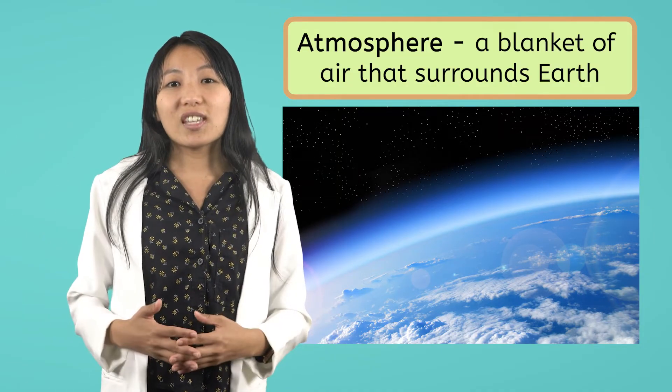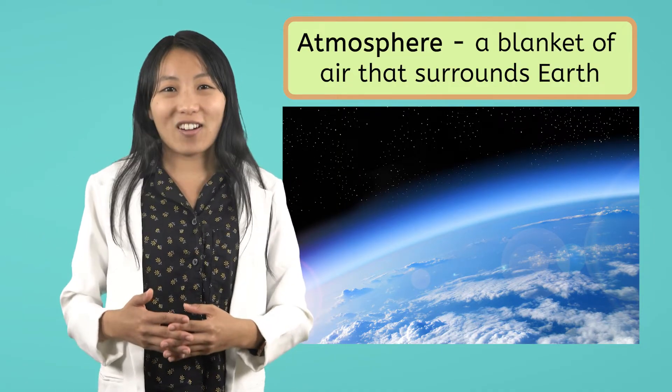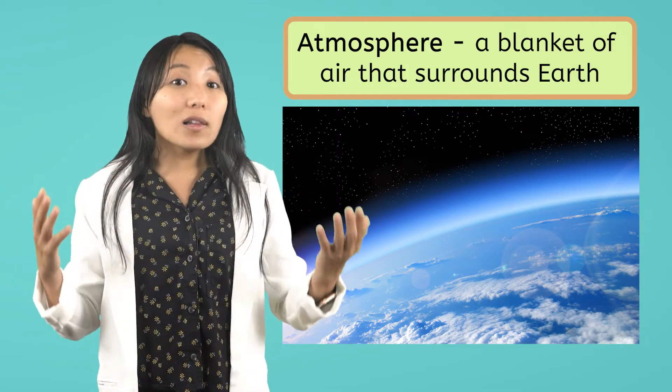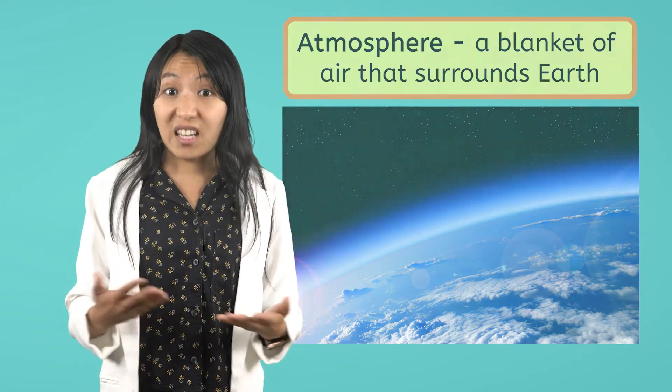Well, in order to understand why the weather changes, it is important to understand where the weather happens. Earth has something called an atmosphere, which is like a big blanket of air that covers Earth's surface. The atmosphere is where all of our weather happens. It is where we live, too. In our atmosphere, clouds, precipitation, wind, and temperature mix together to create different kinds of weather. Our atmosphere is constantly moving and changing, which is what causes the changes in our weather.